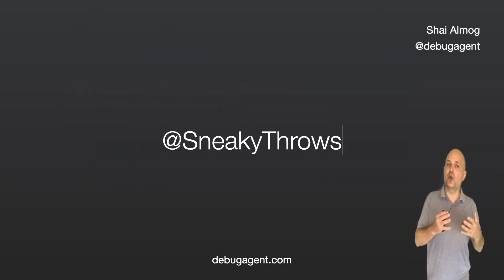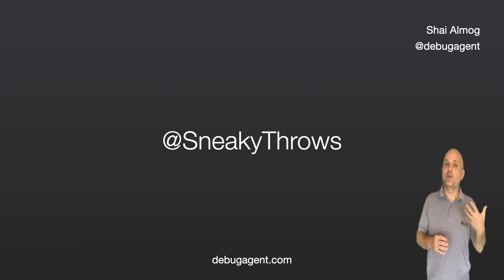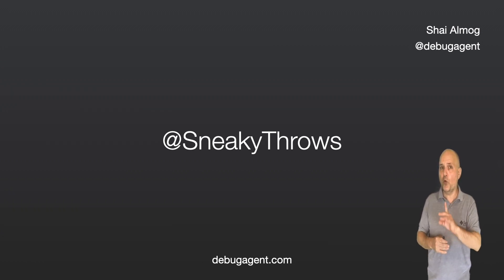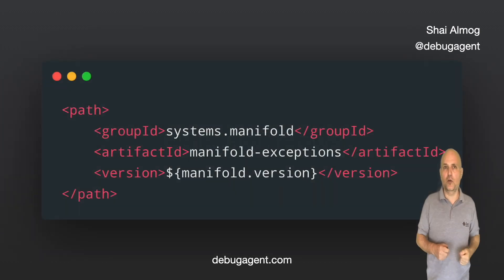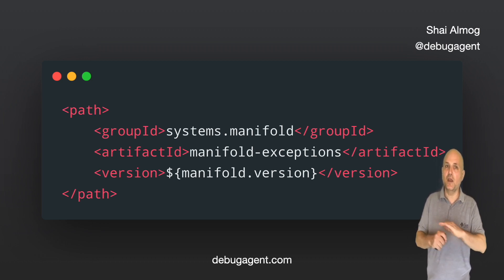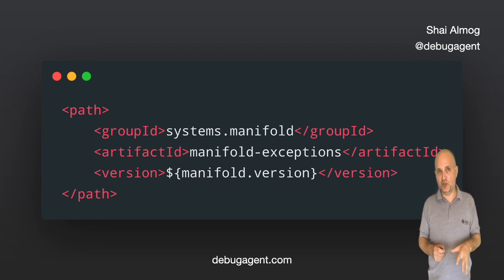Another popular feature of Lombok is the sneaky throws annotation, which allows us to throw a checked exception without declaring or catching it. Manifold has something similar but it is global, unlike Lombok. By adding a block of boilerplate to the POM file we can disable checked exceptions in Java entirely, making them act like runtime exceptions everywhere. Personally I love checked exceptions, but I understand where this is coming from.